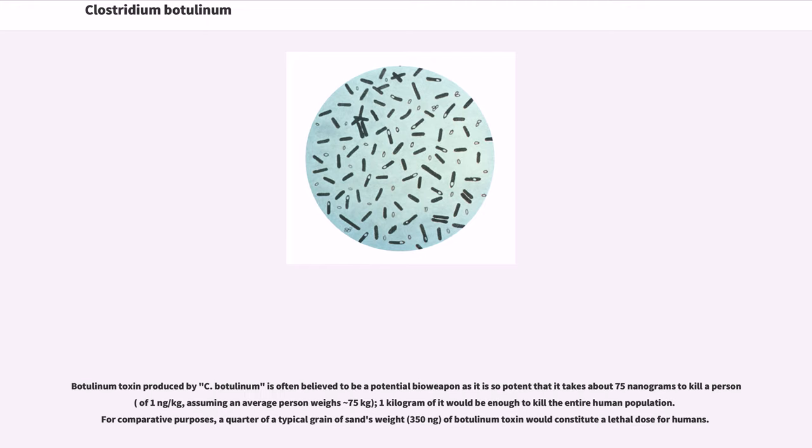Botulinum toxin produced by C. botulinum is often believed to be a potential bioweapon as it is so potent that it takes about 75 nanograms to kill a person. One kilogram of it would be enough to kill the entire human population. For comparative purposes, a quarter of a typical grain of sand's weight of botulinum toxin would constitute a lethal dose for humans.